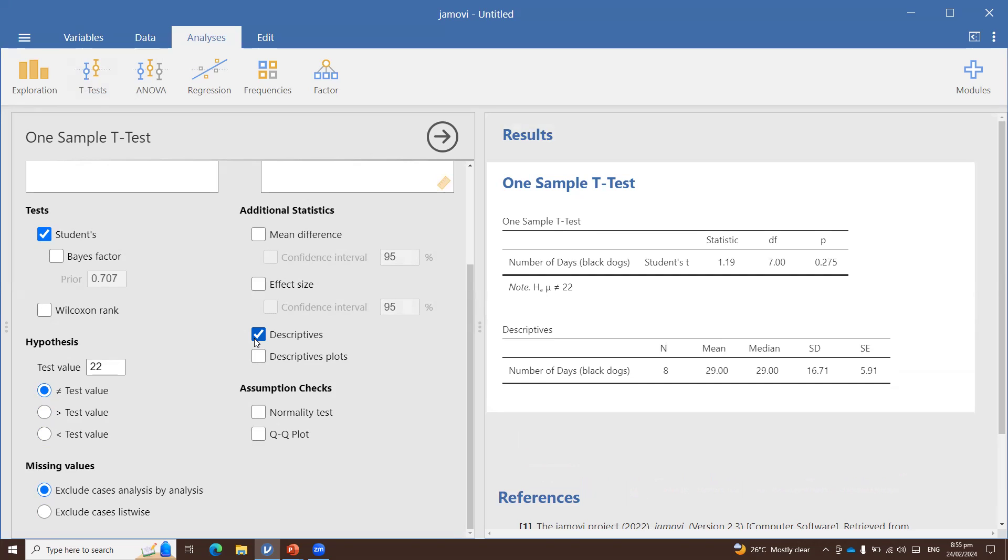Okay, so now we have here on the right the results of the one-sample t-test. We can see here that the statistic is 1.19, and later on, we will compare this with the critical value that we obtained. But as early as now, we can tell that there is no significant difference between black dogs and all dogs, since the p-value, which we can see here, is greater than 0.05. Since this is bigger than 0.05, we fail to reject the null hypothesis. But if you get a value that is smaller than 0.05, that's the time that you will reject the null hypothesis.